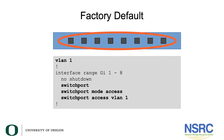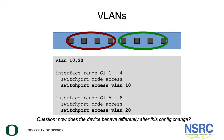We could introduce VLANs. The example now shows four of the ports assigned to one VLAN and the other four to another. Gigabit 1 to 4 are access ports assigned to VLAN 10, and gigabit 5 through 8 are also access ports assigned to VLAN 20. Question: how does the device behave differently after this configuration change?